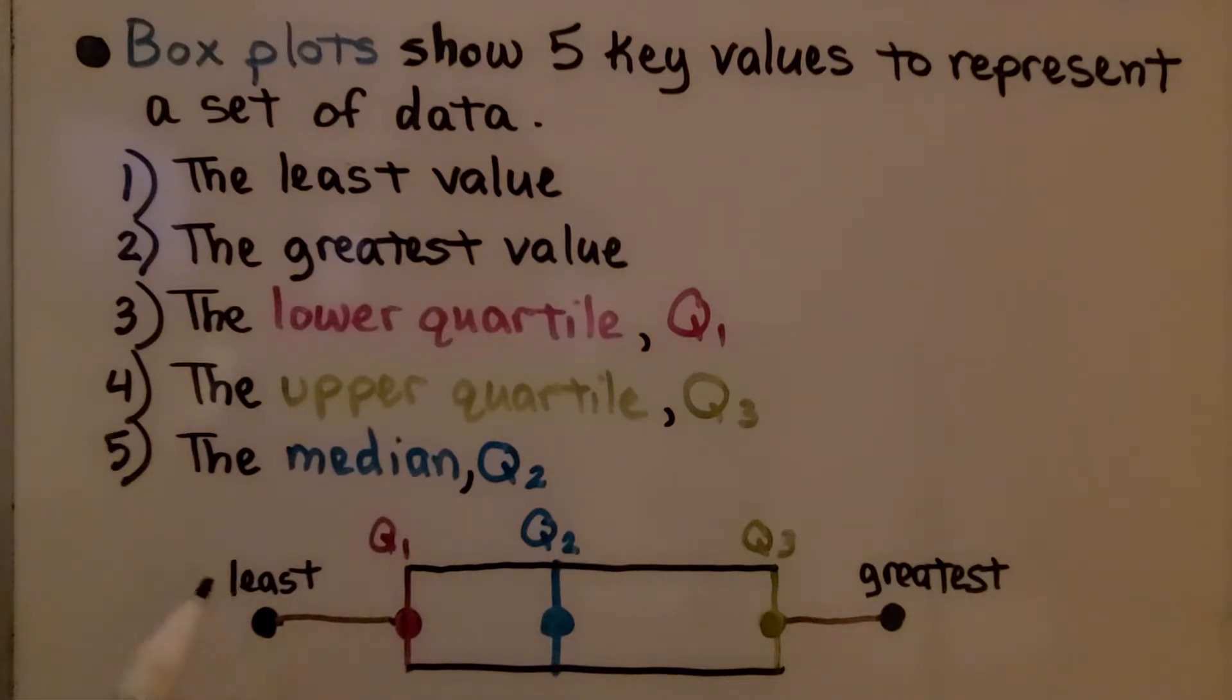So here we would have our least value, our greatest value, the median for all the data here would be Q2. We have the lower quartile Q1 and the upper quartile Q3, and there would be a number line down here.